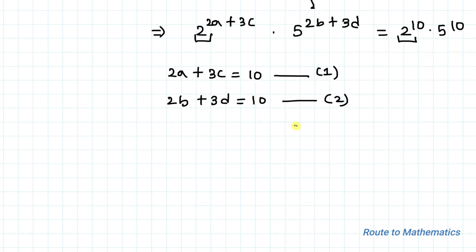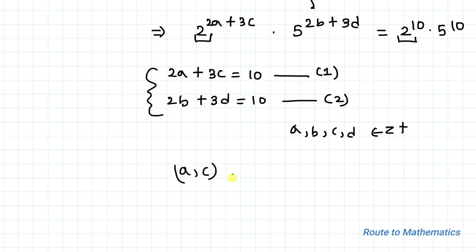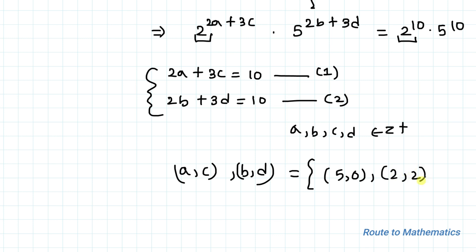Since a, b, c, d are all non-negative integers, in order to satisfy both equations, the pairs (a, c) and (b, d) can each be either (5, 0) or (2, 2).